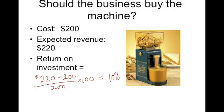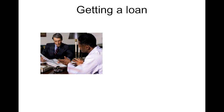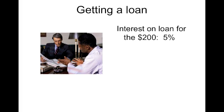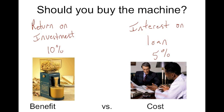That gives you your rate of return for your $200 investment — 10%. Businesses have to weigh that against how much it's going to cost as an interest rate on a loan to buy the machine. Let's say that interest rate is 5%. The rate of return on the machine is 10%; the interest rate on the loan is 5%. The benefit is greater than the cost, so the business should buy the machine.